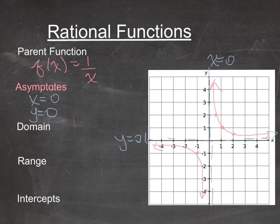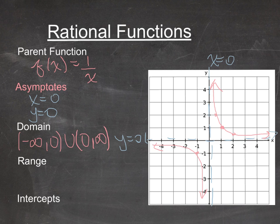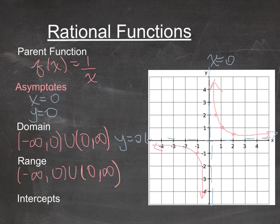The graph gets as close to x = 0 and y = 0 as possible but never touches them. So the domain is (−∞, 0) ∪ (0, ∞), and the range is the same: (−∞, 0) ∪ (0, ∞). There are no x- or y-intercepts because we have asymptotes along both axes.